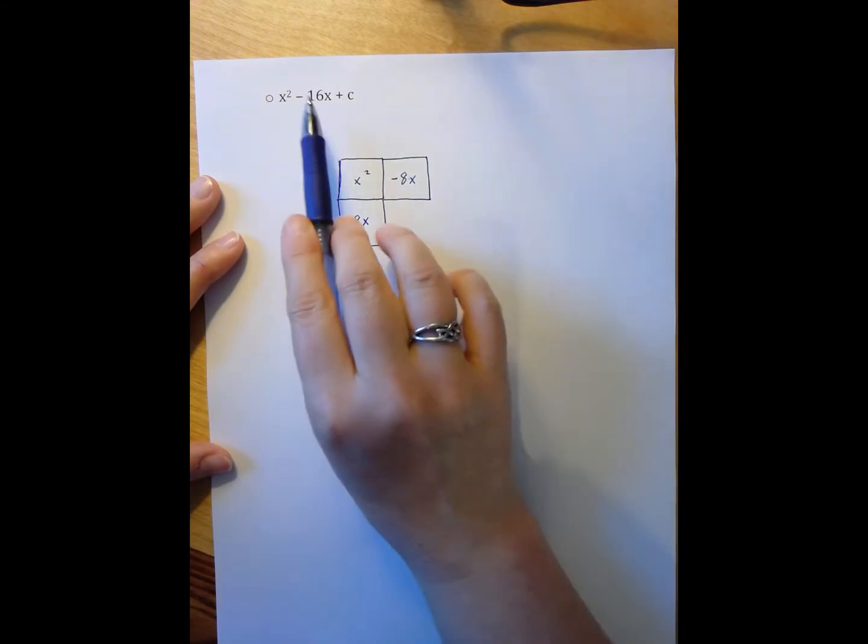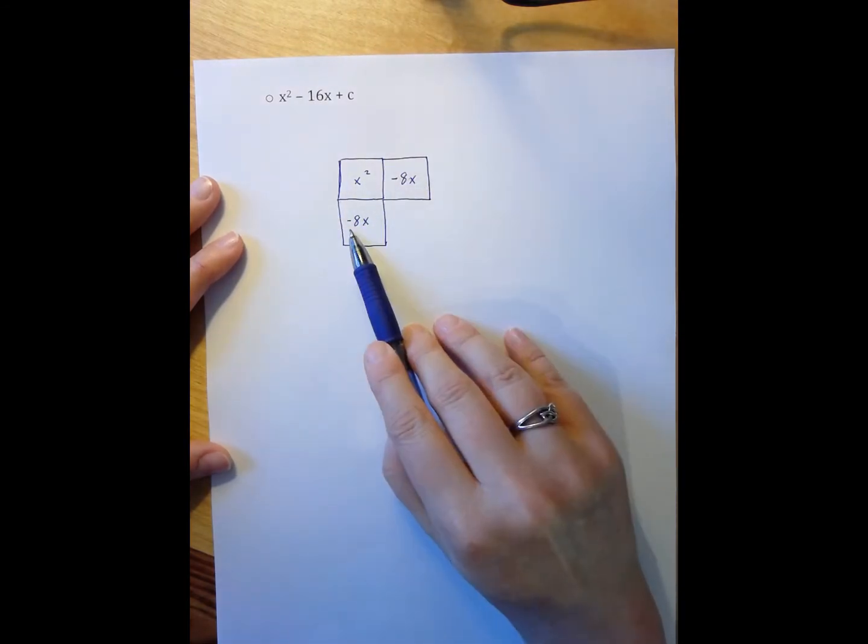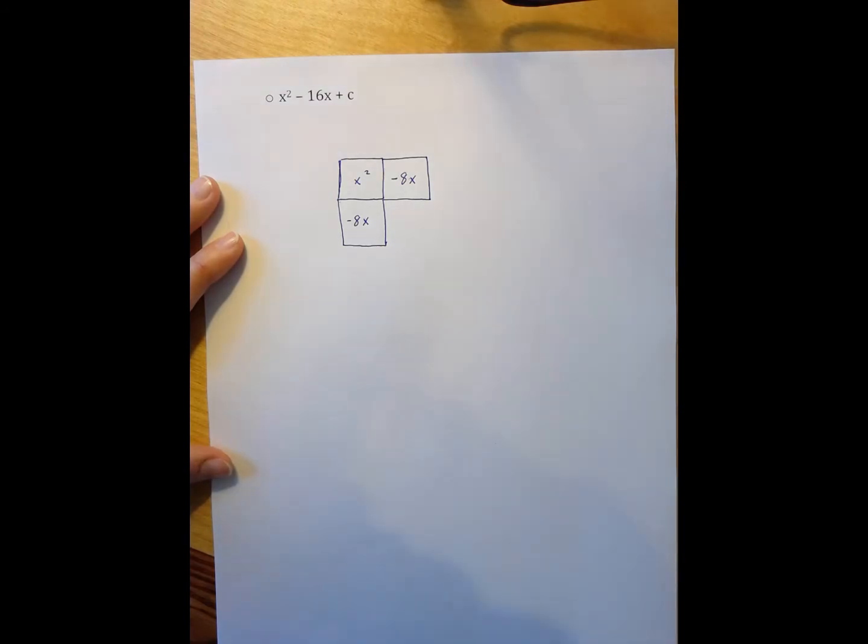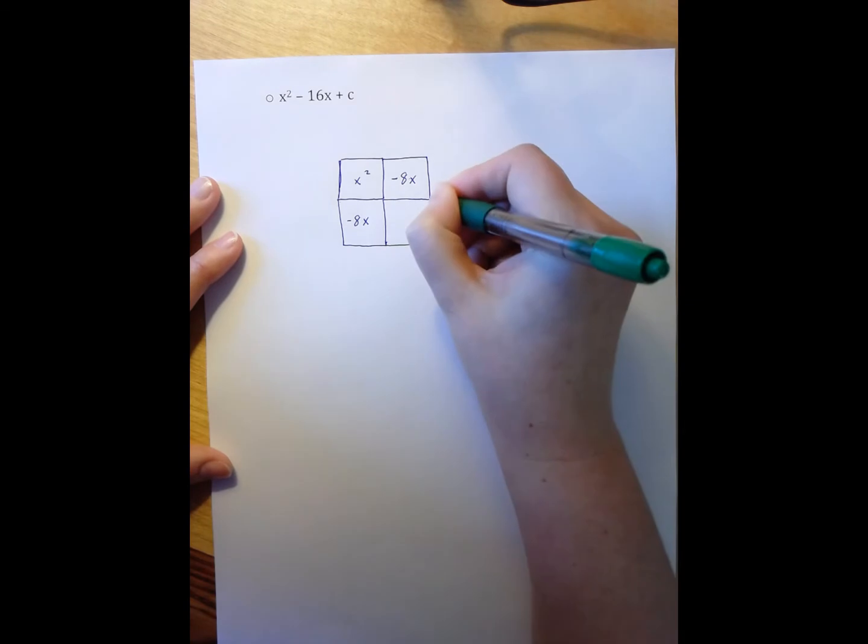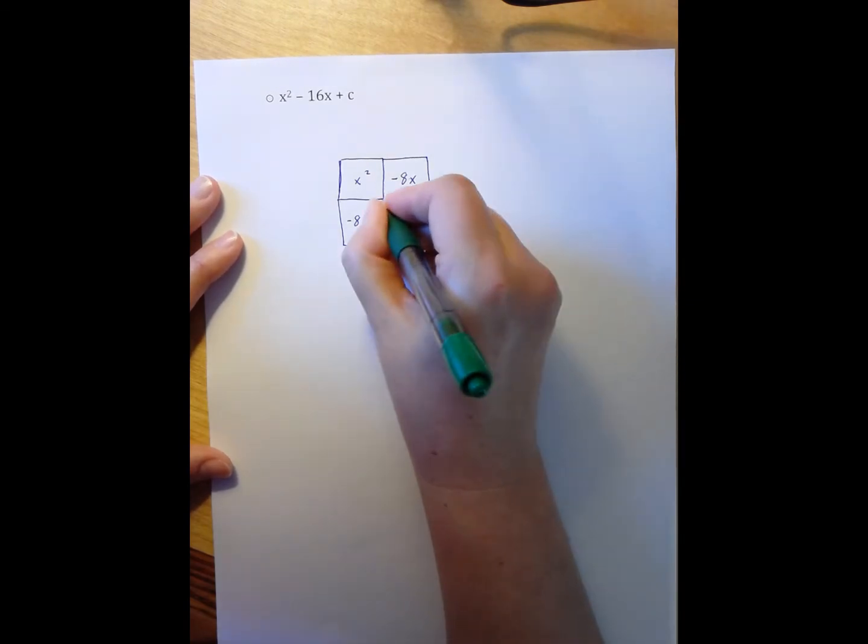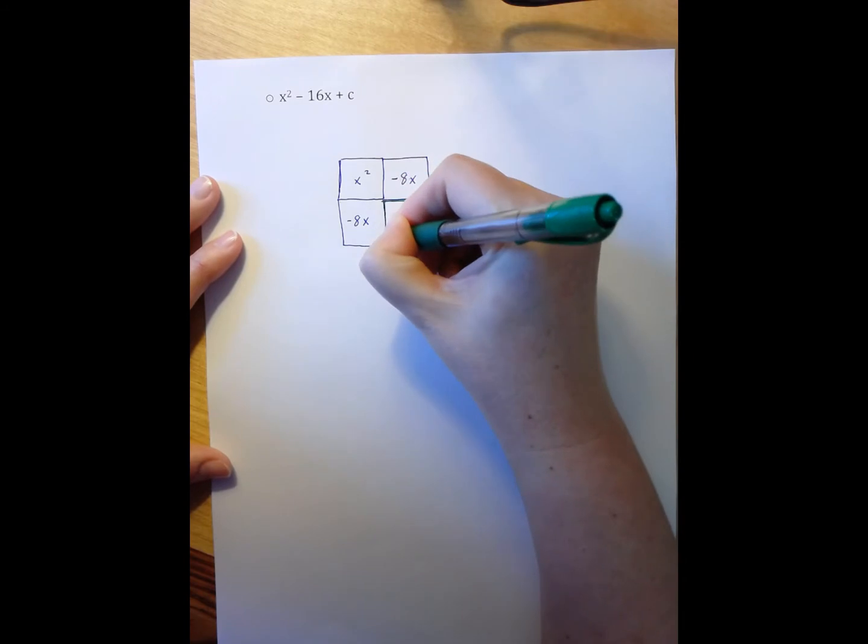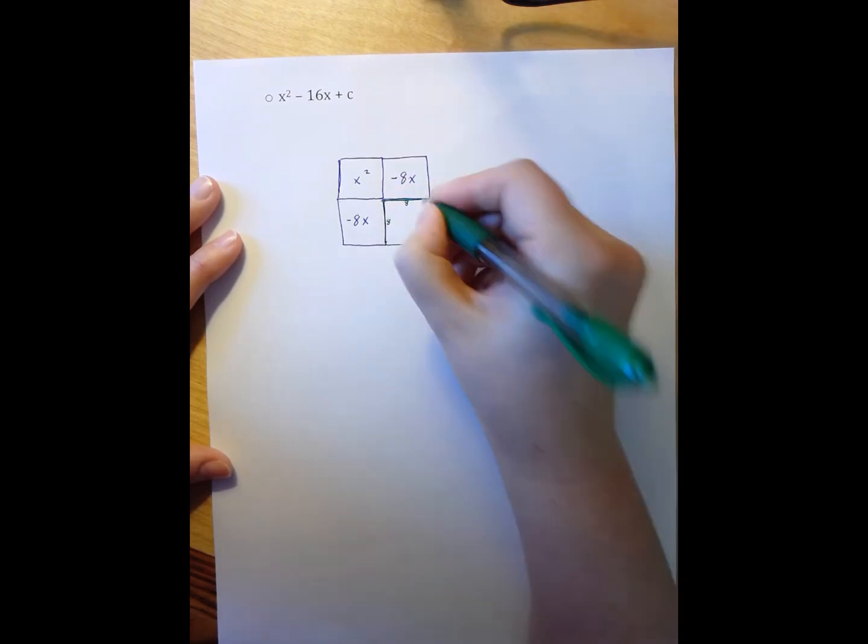I've split my negative 16x into two piles, negative 8x and negative 8x. So now in order to find my C, this is where my C sits. I need to ask myself what dimension this is and what dimension this is. Well, this is 8 times 8, which means my C equals 64.